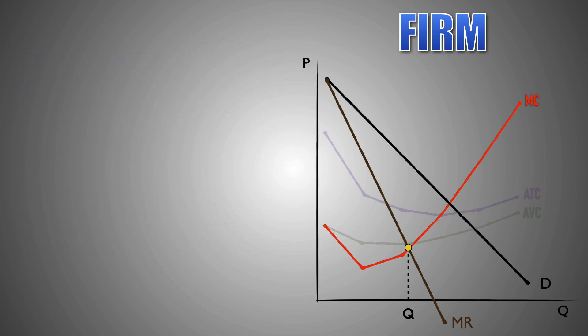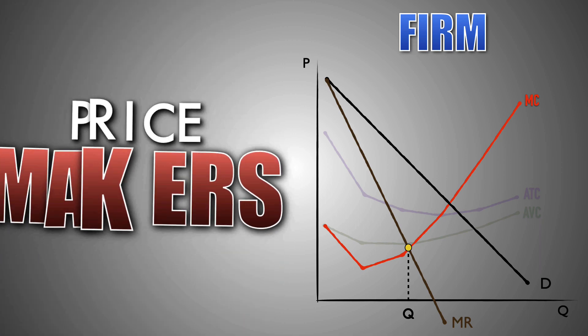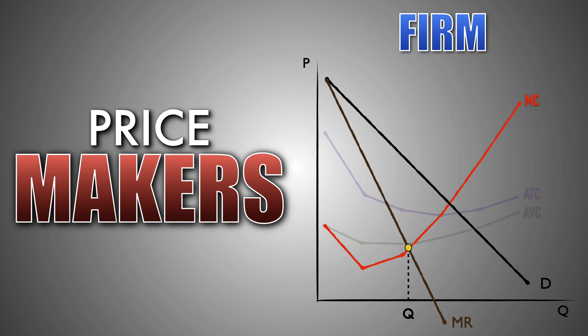However, this profit-maximizing level of output will also help the firm to set the market price for its products. Remember that imperfectly competitive firms are price makers. Price-making firms have the ability to sell their goods at the highest price that consumers are willing and able to pay, set entirely by market demand. Once the firm has identified its profit-maximizing level of output, it simply needs to identify the price that consumers are willing and able to pay at that quantity along the demand curve. The firm will then sell all of its output at that price in the market.